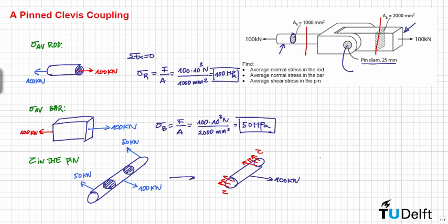Then we know that the average shear stress is equal to the force, 100 kN, divided by these areas, this one and of course this one, so then this is 2 times the area of the pin. Then this is equal to 102 MPa.